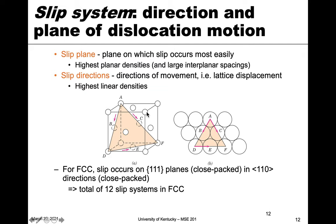Here we're looking at an FCC crystal, and we have the {111} type of plane highlighted. The arrows indicate possible slip directions. The {111} plane is the close-packed plane in FCC, and we can see from this diagram that the edges of the triangle occur along ⟨110⟩ type directions, which are also the close-packed directions because that's where those atoms are in close contact.